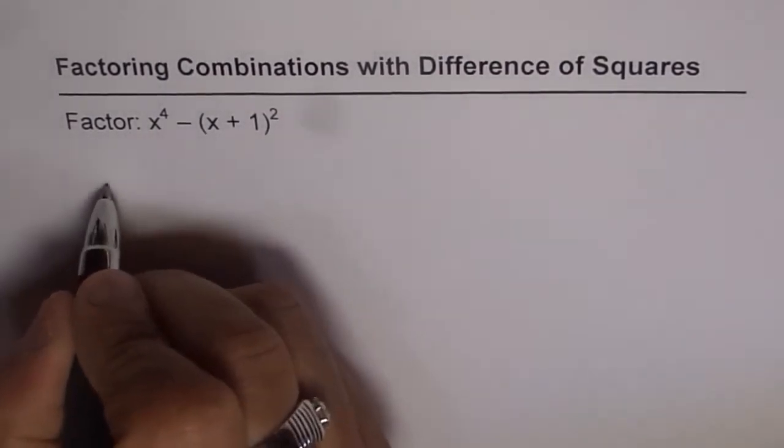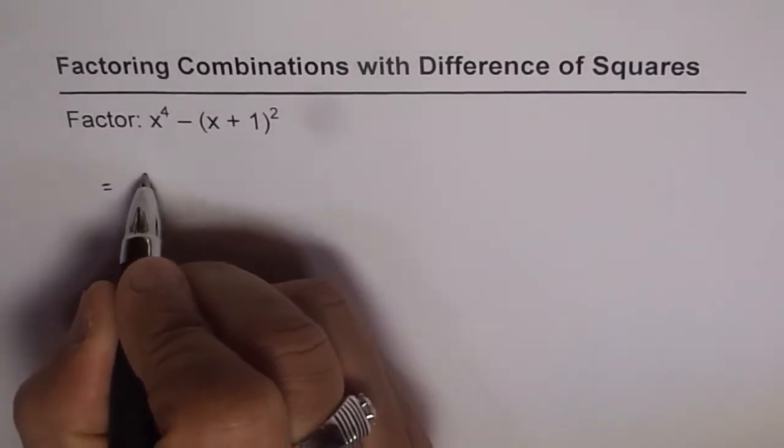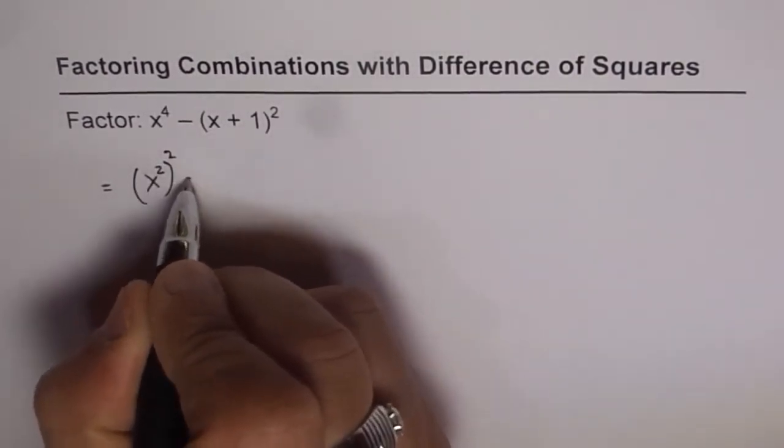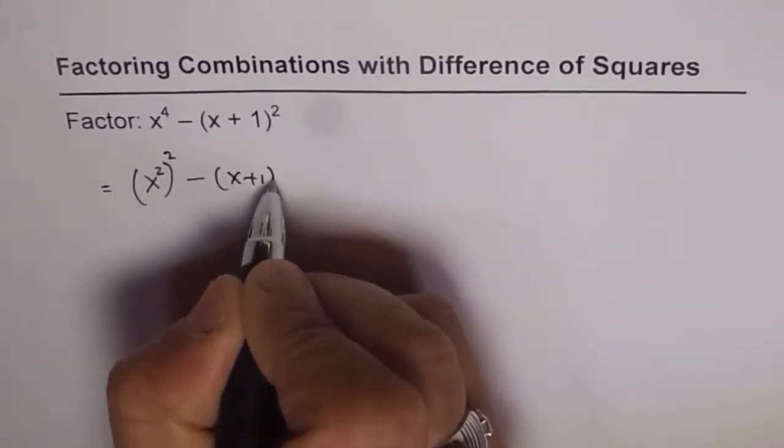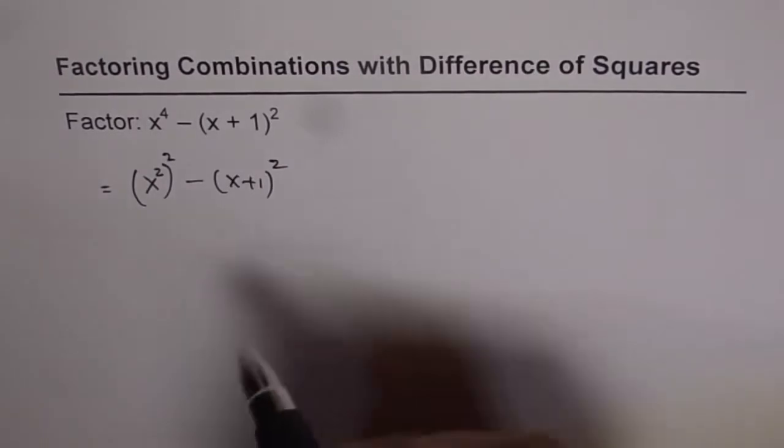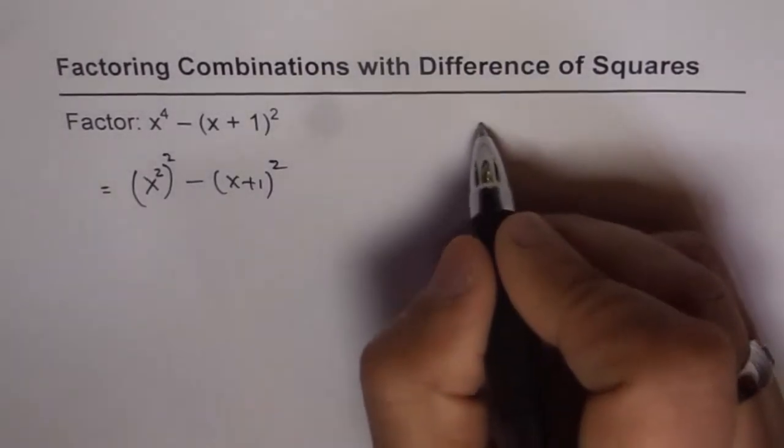Now this could be treated as a difference of square. I'll rewrite x to the power of 4 as x squared whole square minus x plus 1 whole square. Now see this is difference of squares and we can apply a square minus b square technique.